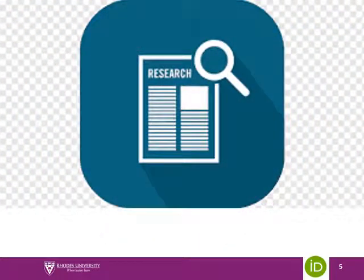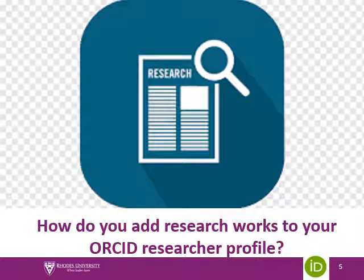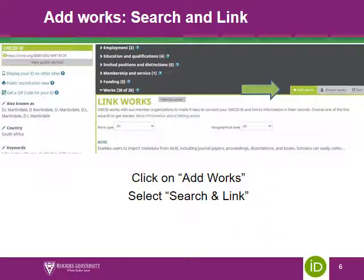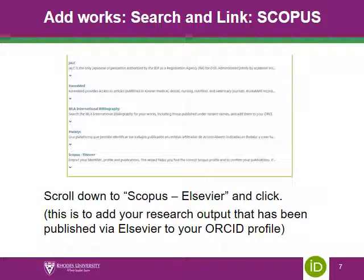The core area of your ORCID profile showcases your research works. There are a number of ways to add works to your ORCID profile. We will look at the search and link option first. Go to 'Add Works' and there will be a drop-down menu — select 'Search and Link.' Scroll down to Scopus Elsevier and click. This is where you will add your research output with Elsevier publishers to your ORCID profile.